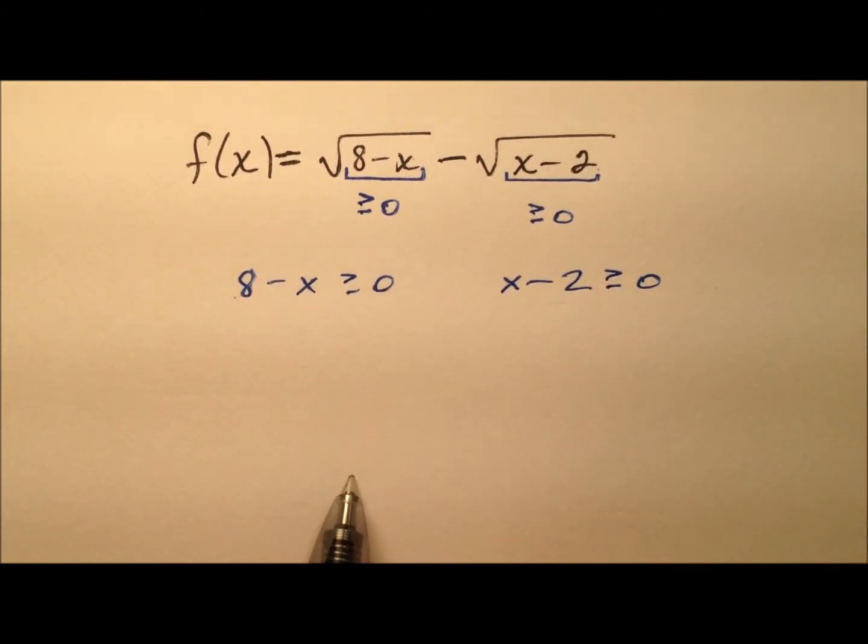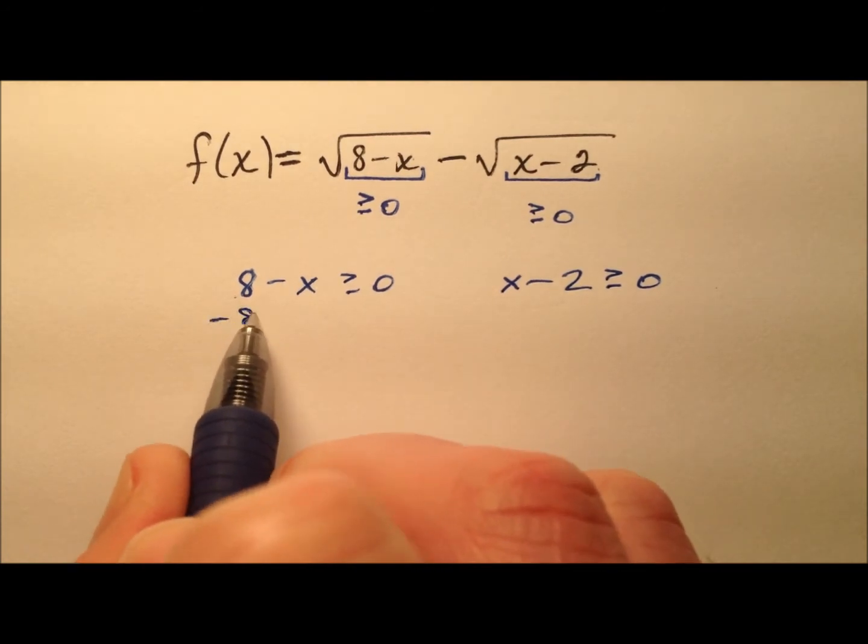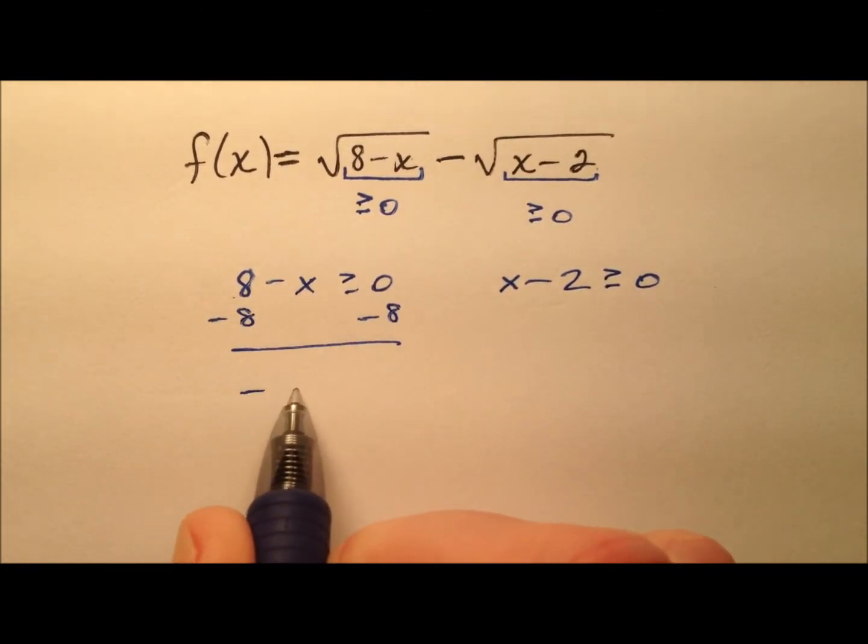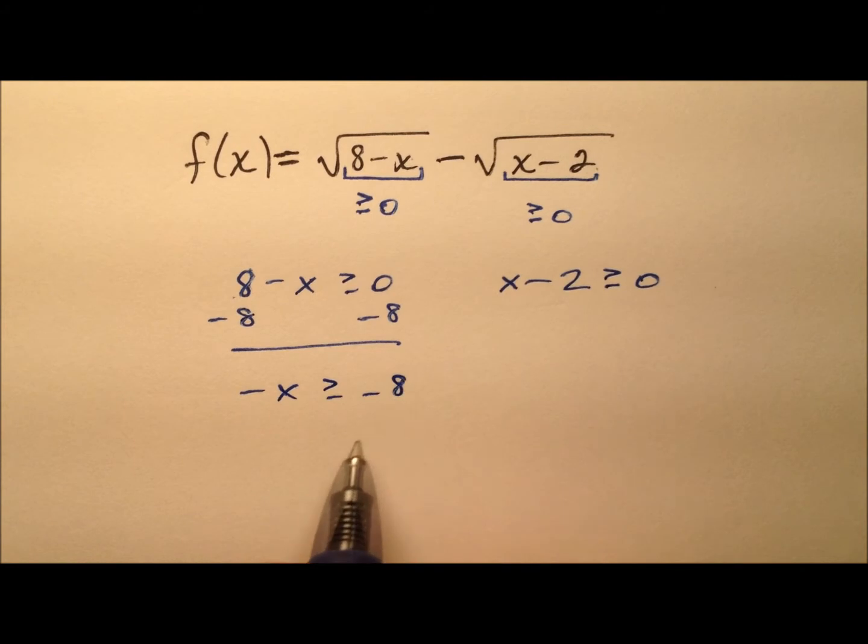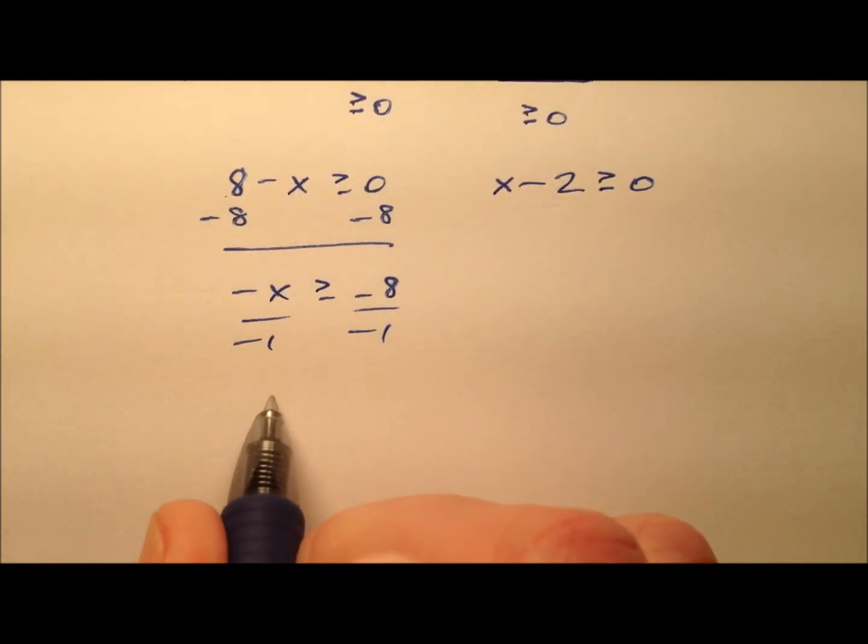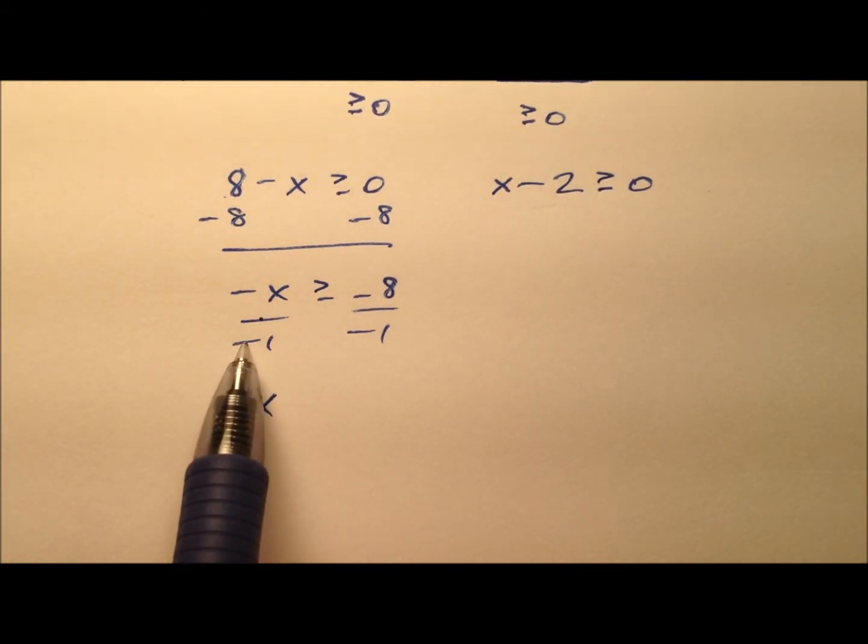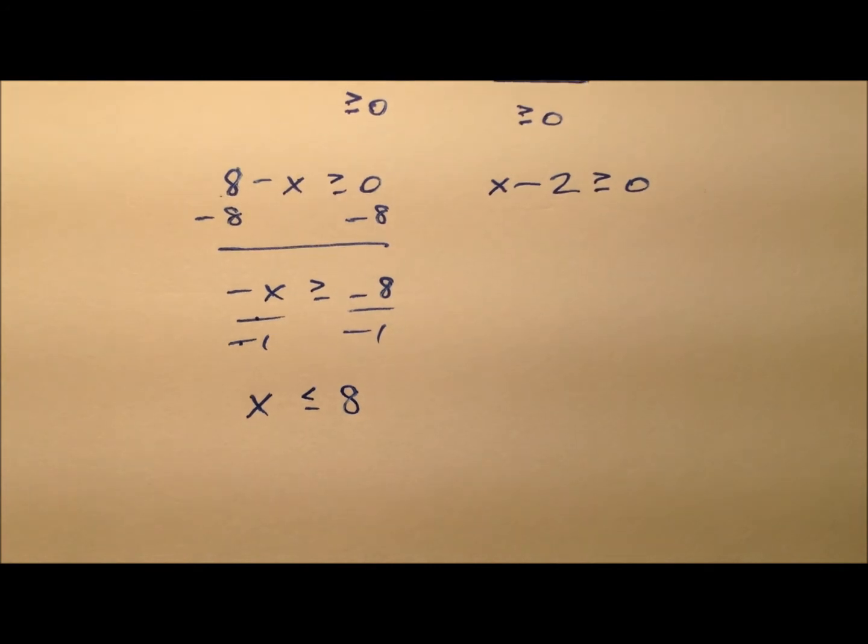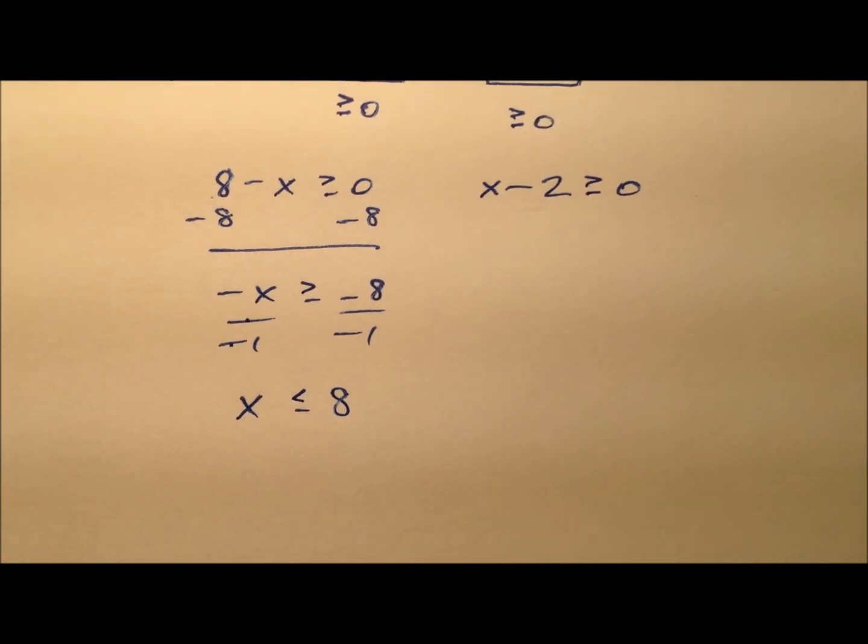We'll start by subtracting 8 from both sides. And then we can go ahead and divide each side by negative 1 to get that x by itself. And of course, remember when we're multiplying or dividing by a negative, we have to flip the sign of the inequality. So we have x is less than or equal to 8.